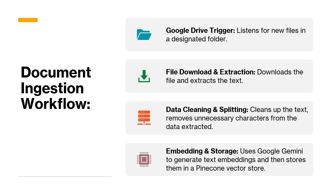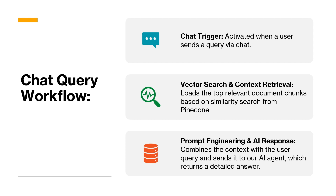The first is the document ingestion workflow. We have a Google Drive trigger that listens for new files in a designated folder. Once a new file is uploaded, the workflow starts — the next step is to download the file and extract its contents using file download and extraction nodes. Then we clean the data by removing unnecessary characters. Finally, we send it to the embedding and storage node. For this demo I'll be using Google Gemini to generate text embeddings and store them in a Pinecone vector store.